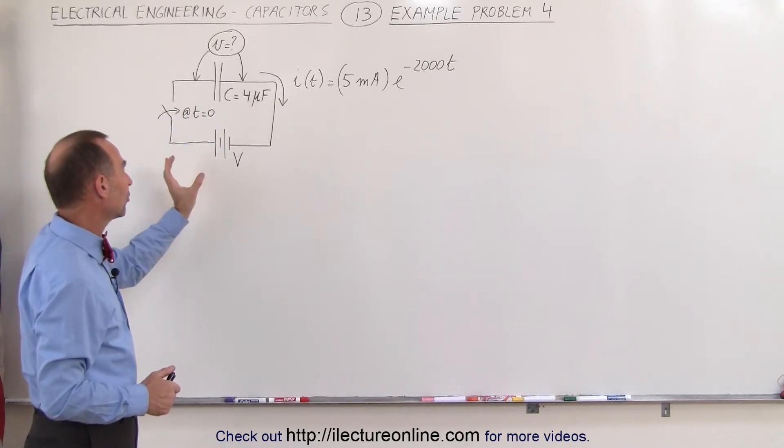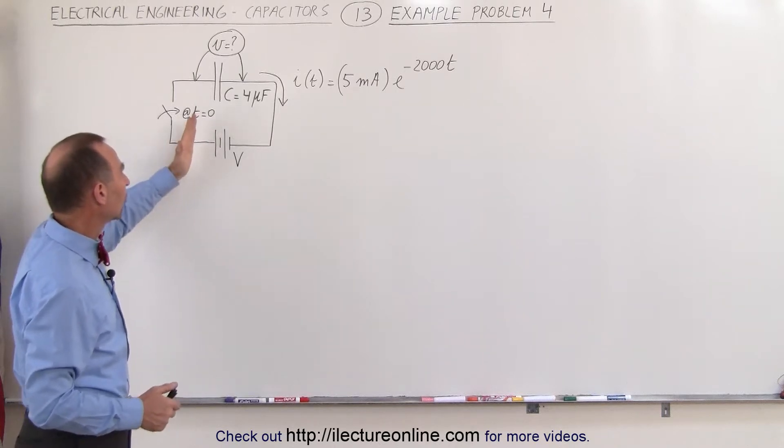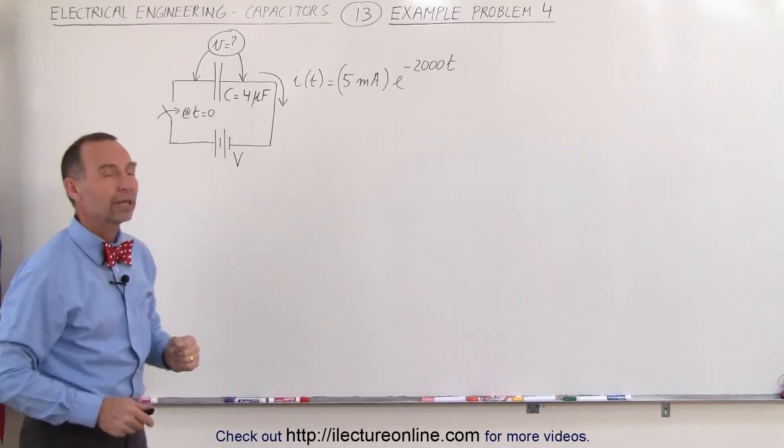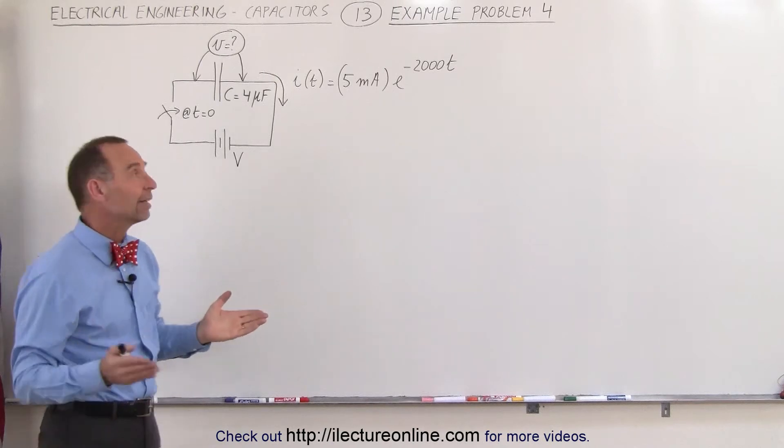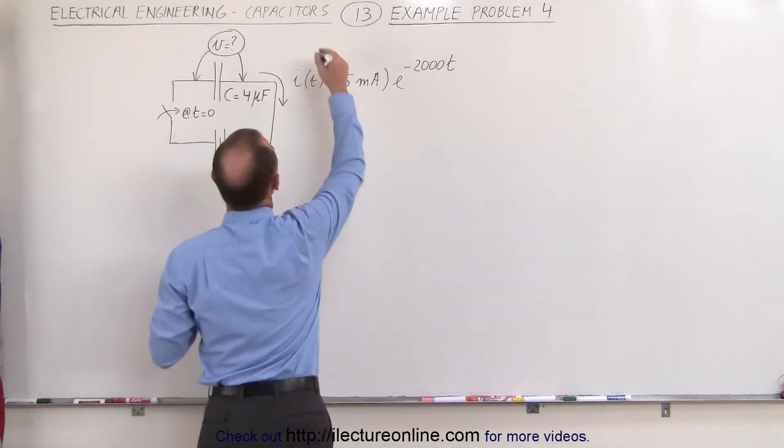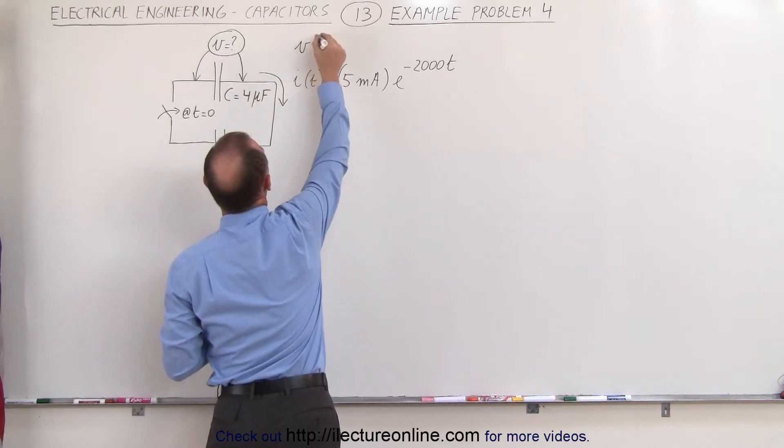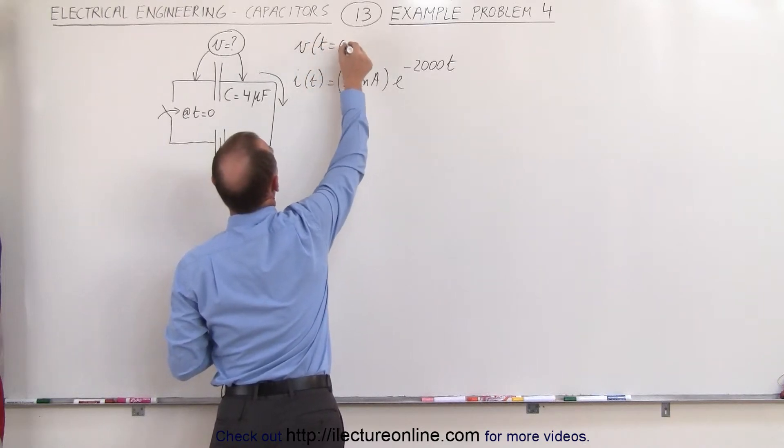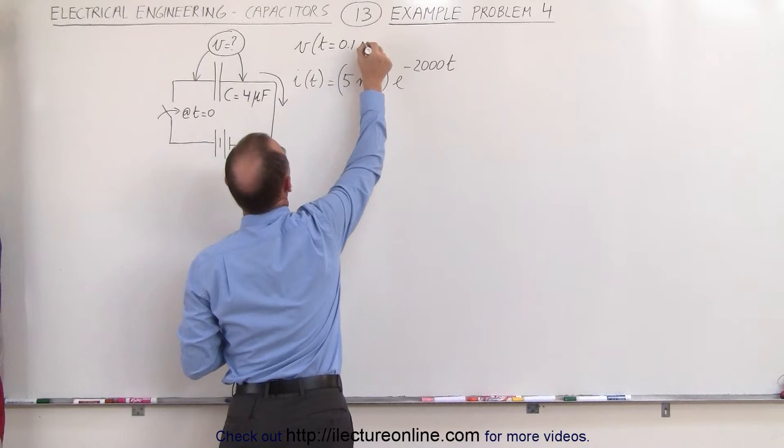Here we have a situation where we have a steady state battery or power supply. We close the switch at t equals zero and then the current begins to flow. What we're trying to find is the voltage across the capacitor and let's say that we also want to find the voltage across the capacitor when t is equal to 0.1 seconds.